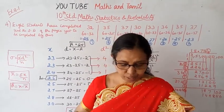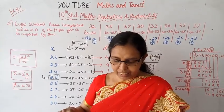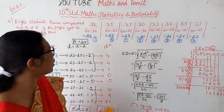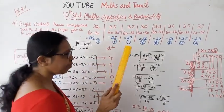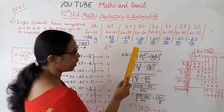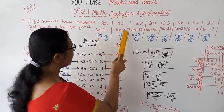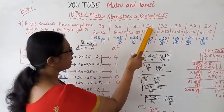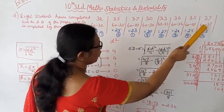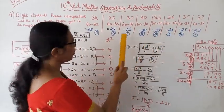The eight students have completed 32, 35, 37, 30, 33, 36, 35 pages. The total is 60 pages. So pages yet to be completed: 60 minus 32, 60 minus 35, 60 minus 37, 60 minus 30, 60 minus 33, 60 minus 36, 60 minus 35, 60 minus 37.